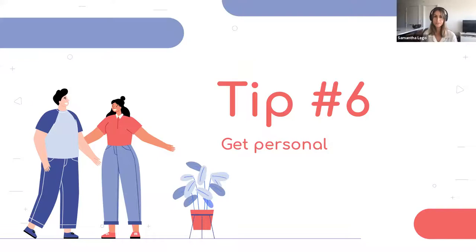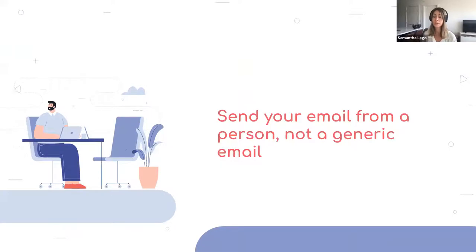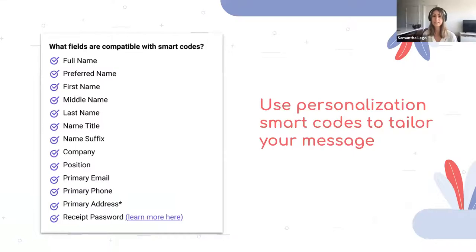Tip number six: get personal. Speaking face-to-face is obviously very intimate, but there are handy techniques you can apply to make your virtual relationship feel more personal. For example, send your email from a person, not a generic address — 'samantha.lego@keela.com' rather than 'marketing@keela.com.' We also have something called smart codes or merge tags: placeholders that get replaced by the relevant value. For example, 'Hey [first name]' becomes 'Hey Sam,' adding familiarity with no extra effort — it automatically pulls from your contact records. For Keela users, information contacts provide via forms can be used as a smart code, including name, organization, title, programs, and campaign information.